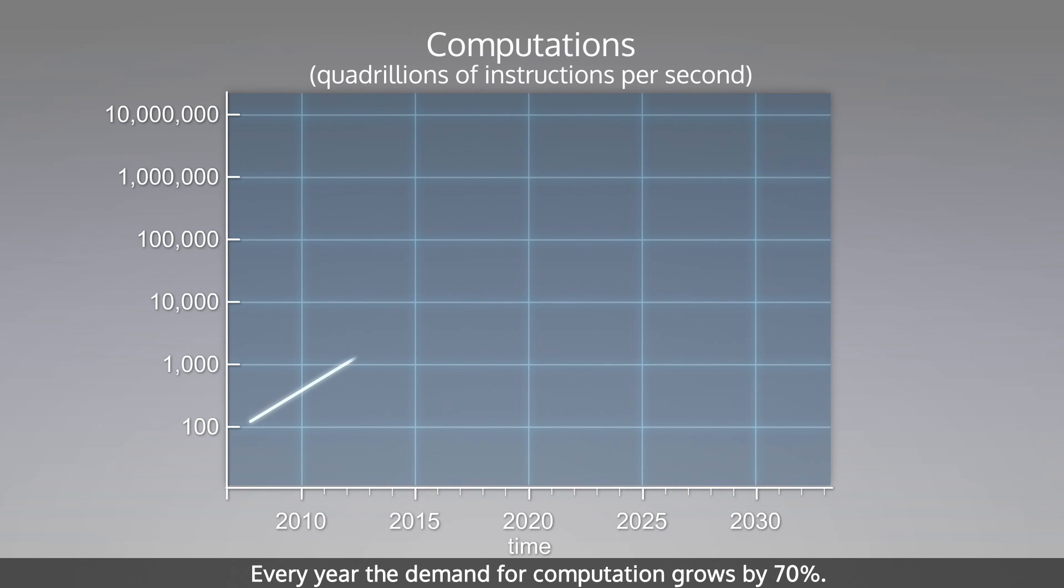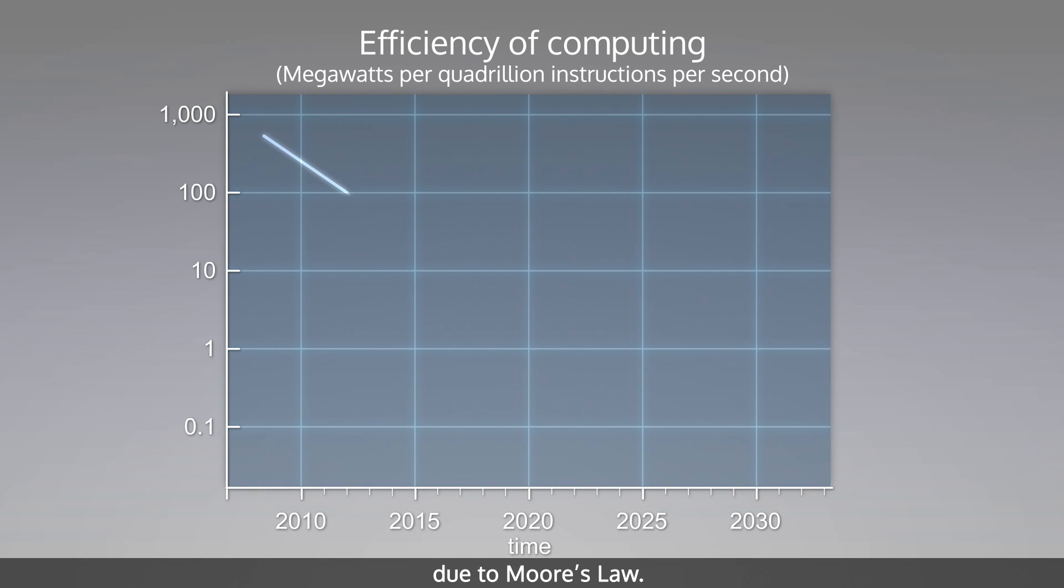Every year the demand for computation grows by 70%. This has been mostly offset by increasing efficiency in silicon transistors due to Moore's law.